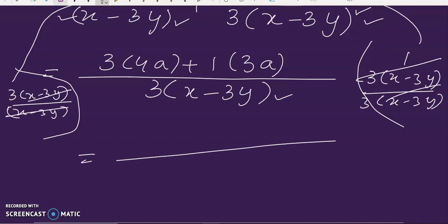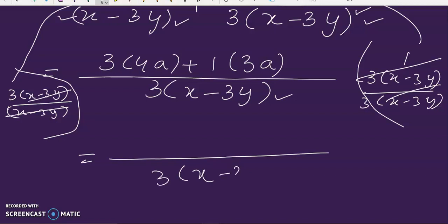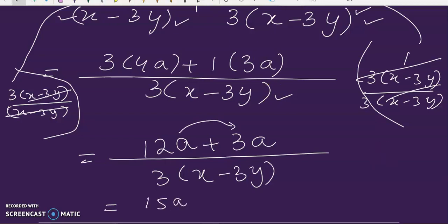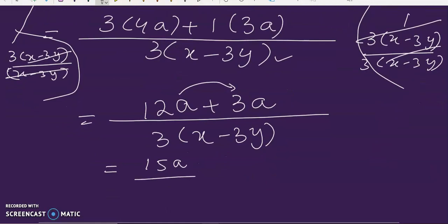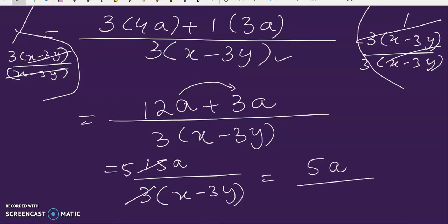So we open up the brackets. Here we get 12a plus 3a, so when we add these two, we get 15a divided by 3 times x minus 3y. Now we can divide 3 and 15 by 3, 3 5s are 15, so we get 5a over x minus 3y. So this is our answer.